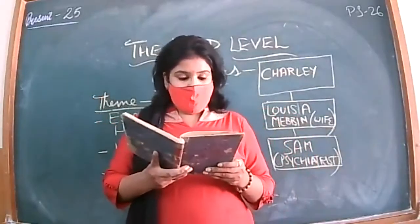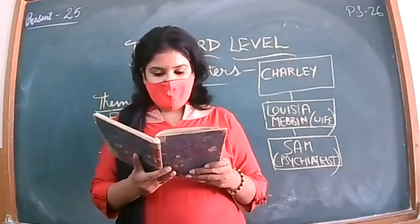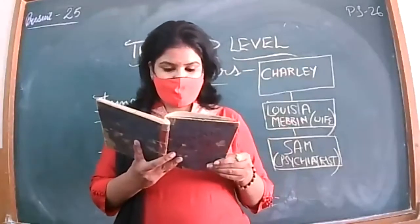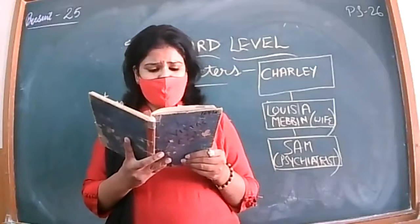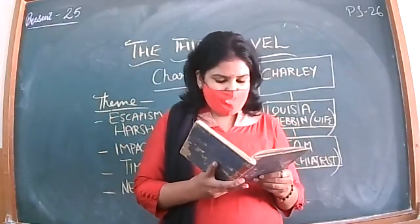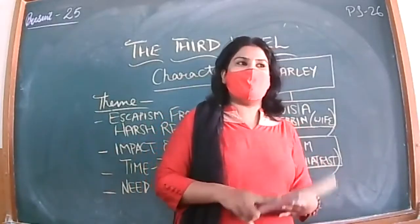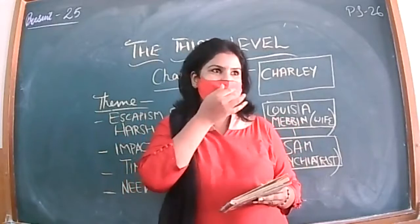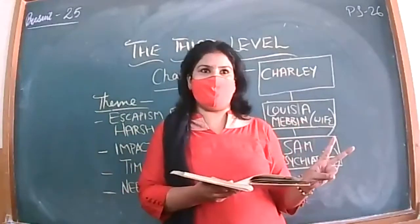Our focus is on Charlie now. Let's see what happens on page number three. Last paragraph we were reading: 'That day I turned into Grand Central from Vanderbilt Avenue and went down the steps to the first level where you take trains like the 20th Century. Then I walked down another flight to the second level where the suburban trains leave from, ducked into an arched doorway heading for the subway and got lost.'